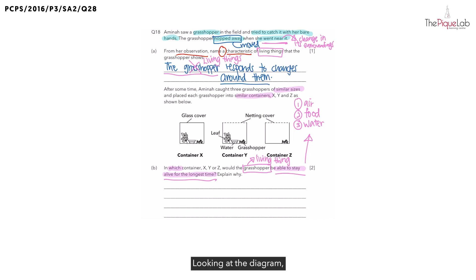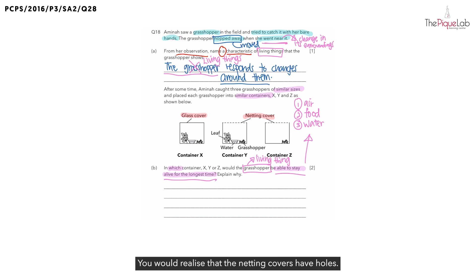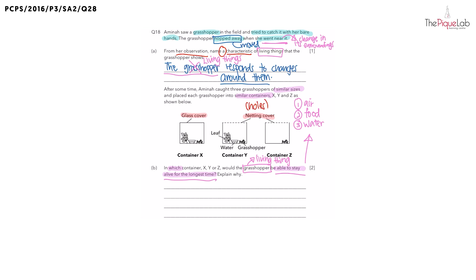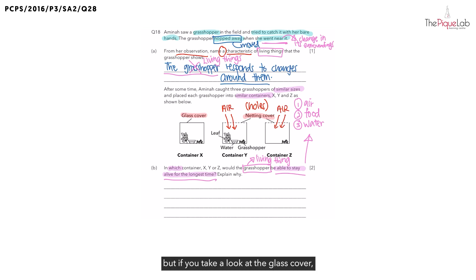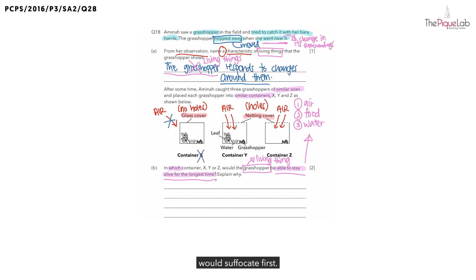Let's take a look at air first. Looking at the diagram, you can tell that there are differences between containers X, Y and Z. For container X, you realize that it is covered with a glass cover, while containers Y and Z are covered with a netting cover. The netting covers have holes, which means air is able to enter these containers. But the glass cover does not have holes, so air will not be able to enter container X. And if air cannot enter container X, the grasshopper in container X would not stay alive for the longest time — in fact, the grasshopper in container X would suffocate first.